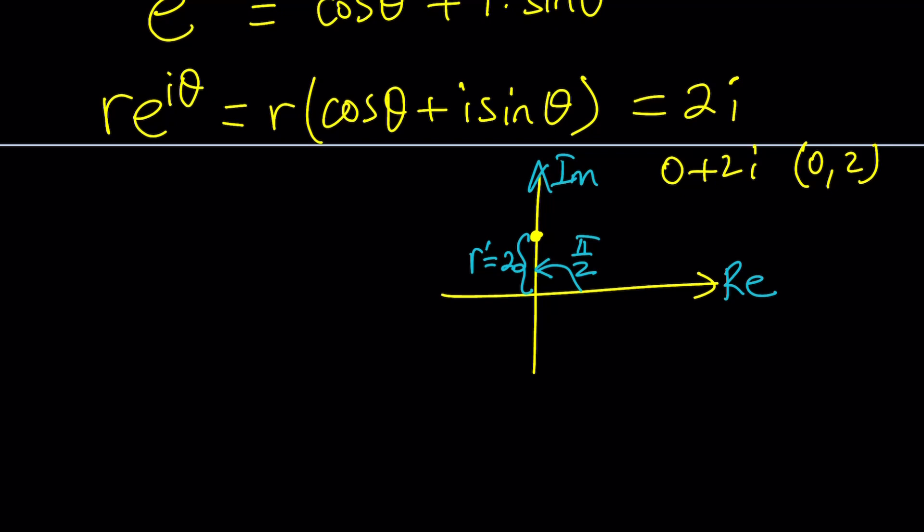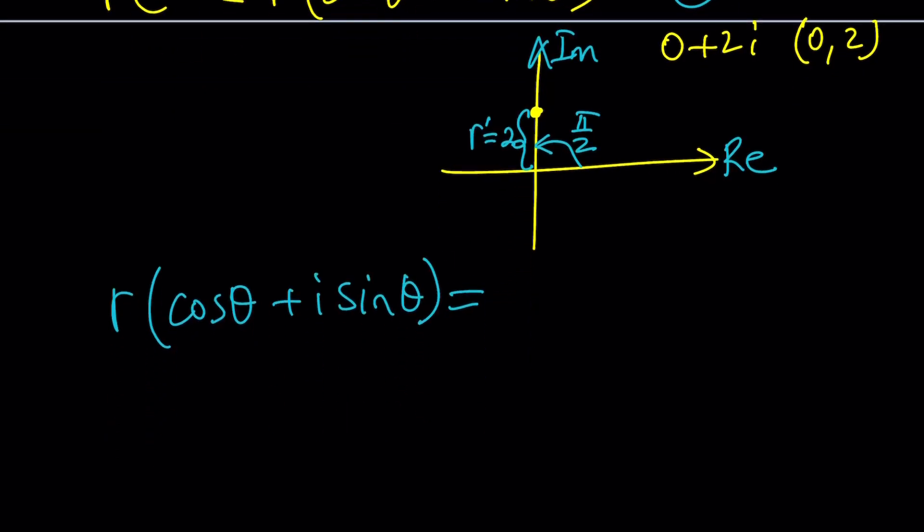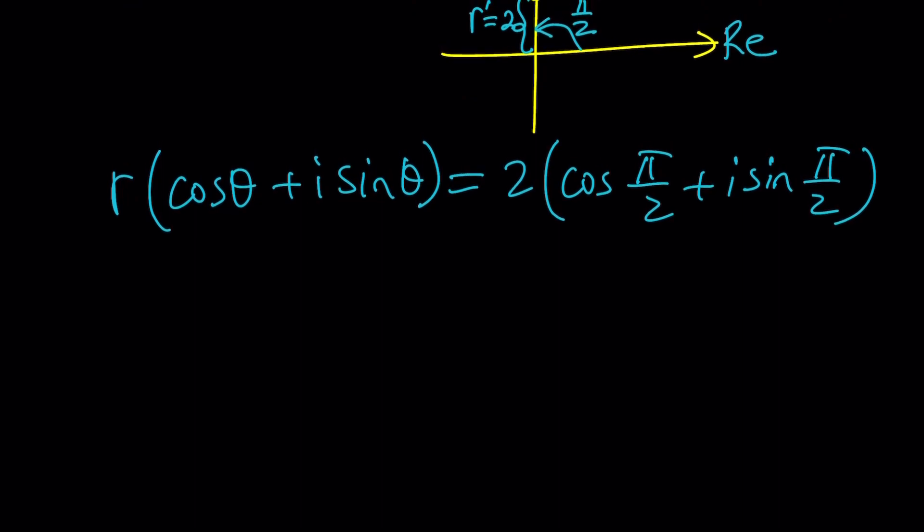And the angle is going to be pi over 2 degrees. But remember, that's just the principal value. Of course, you can go ahead and increment this by multiples of 2 pi, which gives you infinitely many values for this angle. Let's go ahead and simply write this in polar form. So modulus is 2 and the theta is pi over 2.